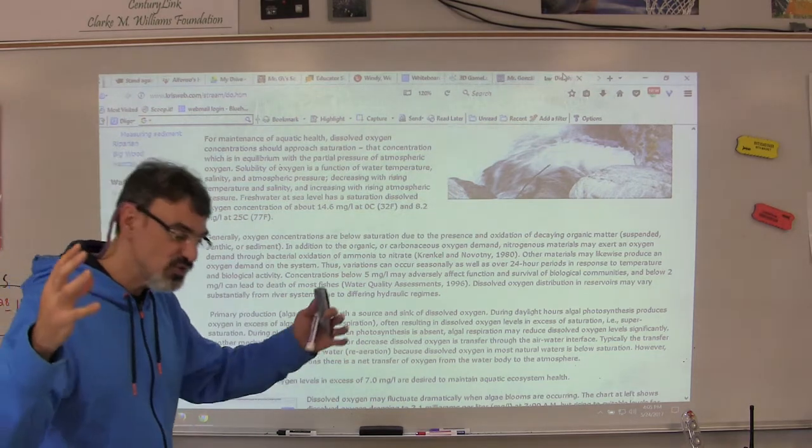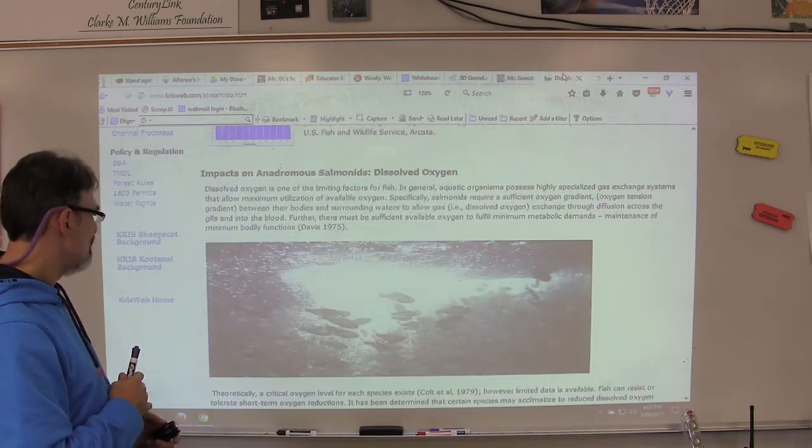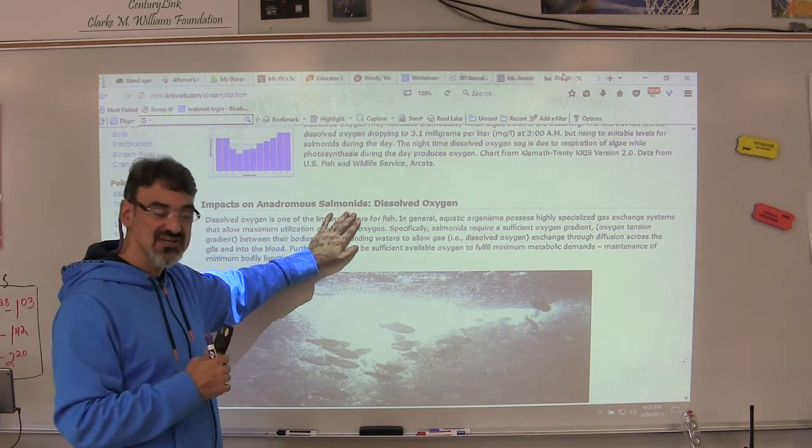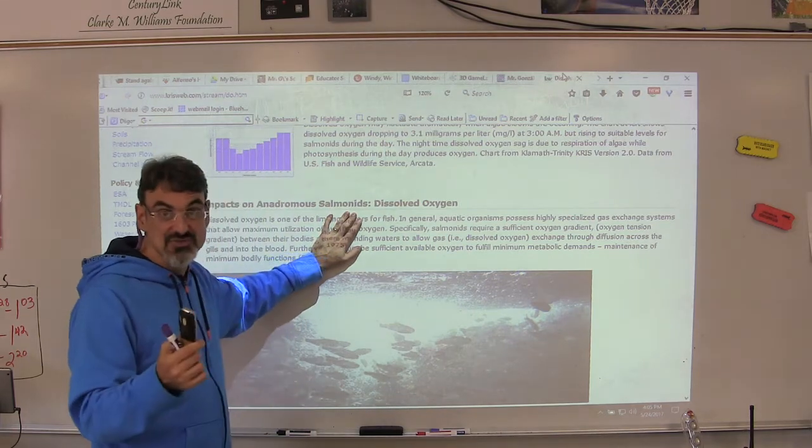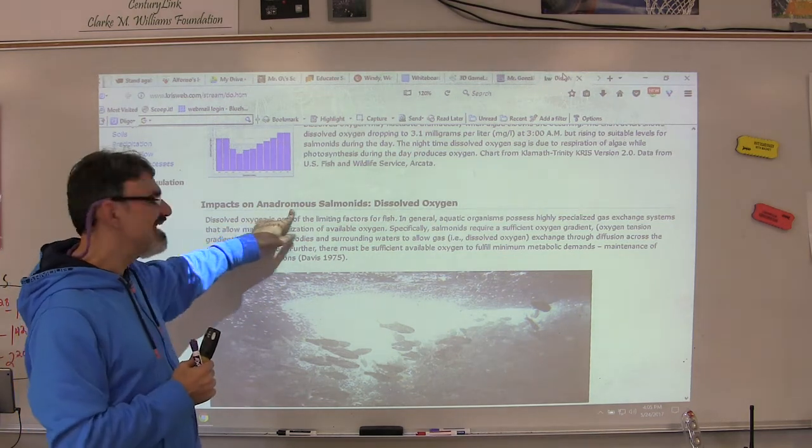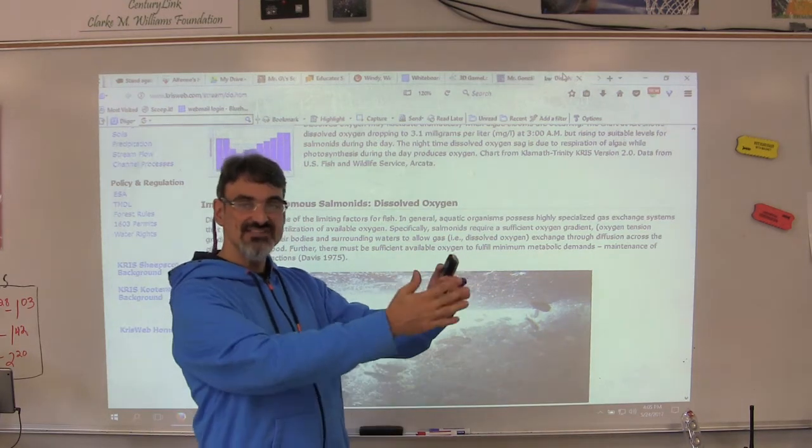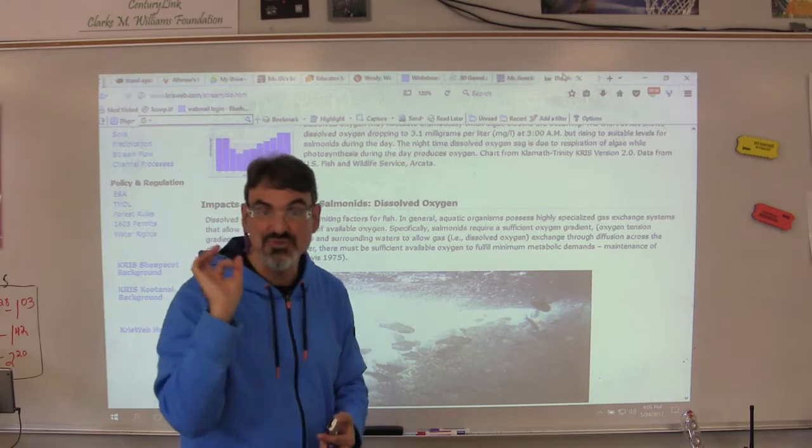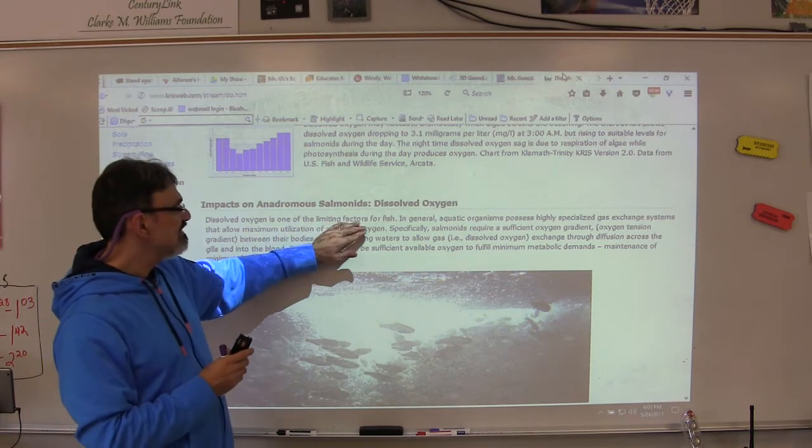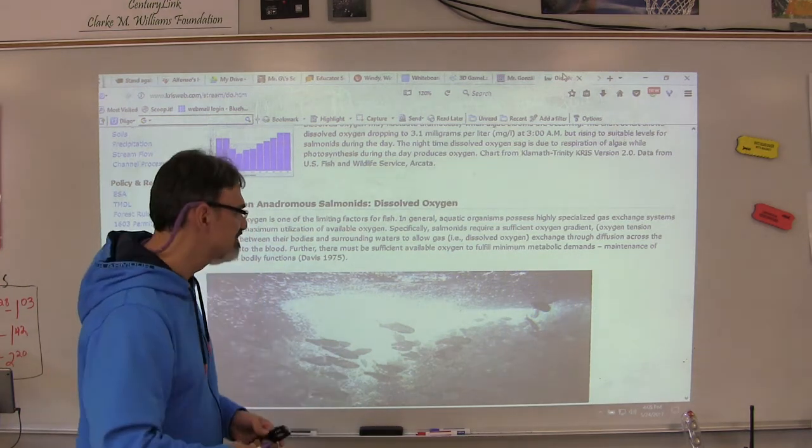So warm water holds less dissolved oxygen. Now here are a couple of important words: anadromous salmonids. Salmonids are fish that are in the family of salmon, and some trout are salmonids. Anadromous refers to a fish that is hatched in a stream but then makes its way out to sea to get big and then comes back to the stream where it was born to spawn. So dissolved oxygen is one of the limiting factors for fish. If they have enough dissolved oxygen they will thrive, survive and come back to spawn.